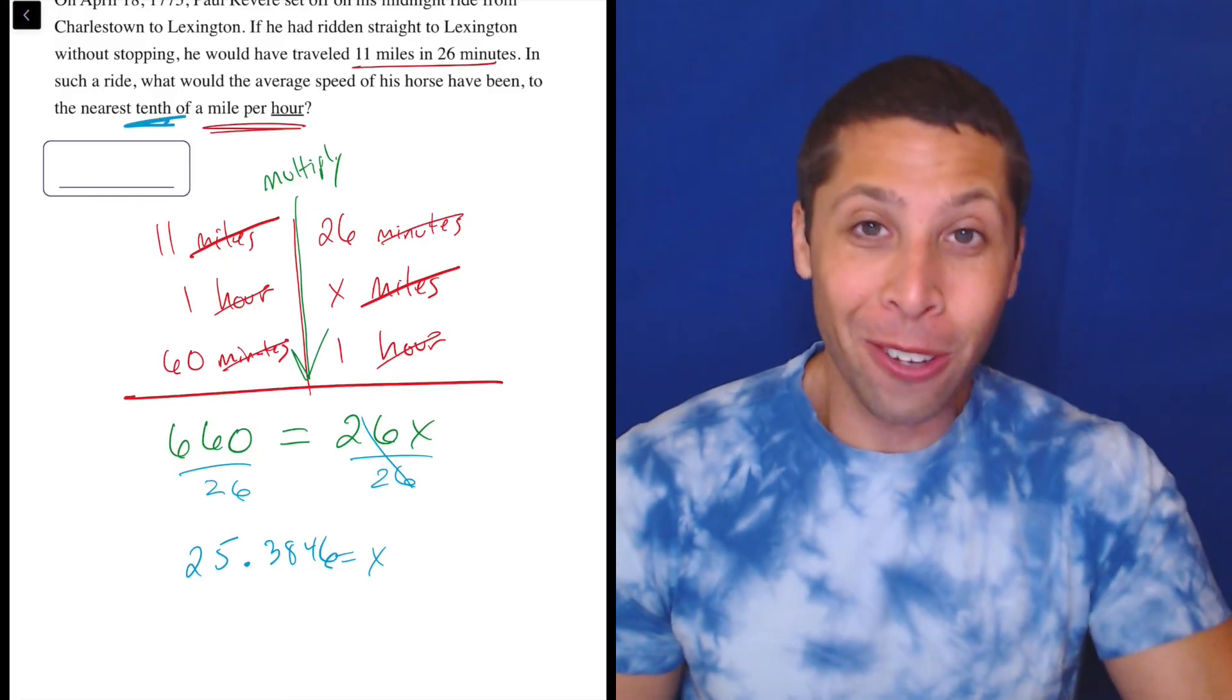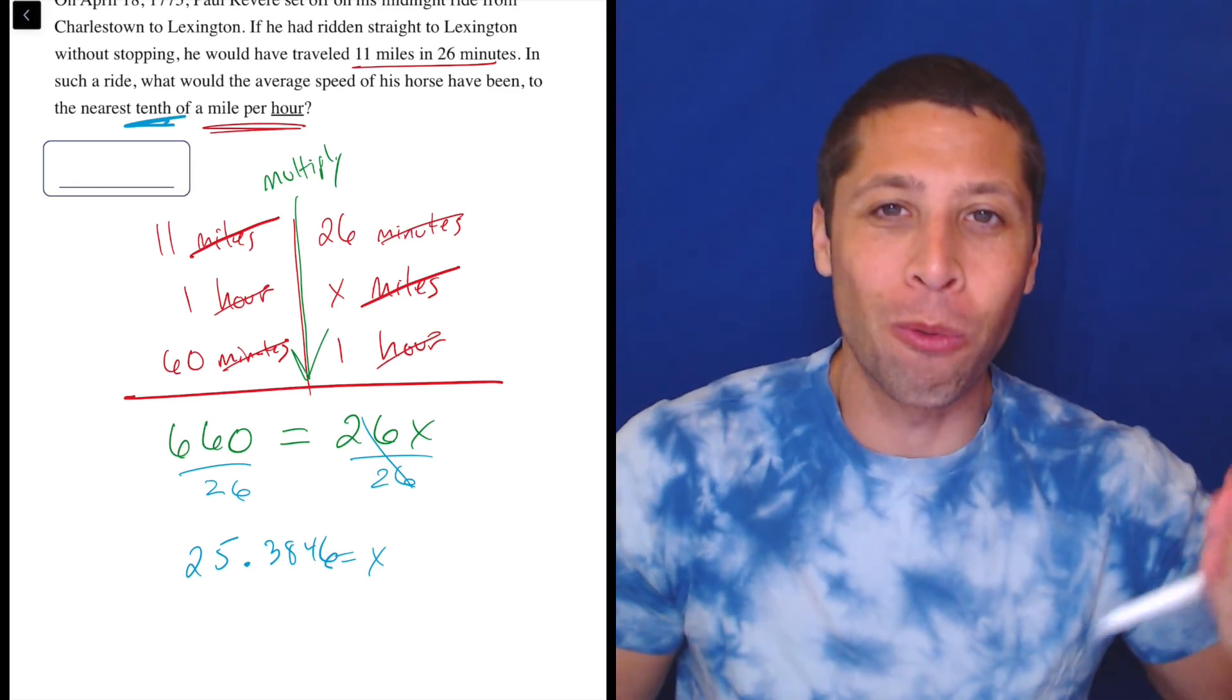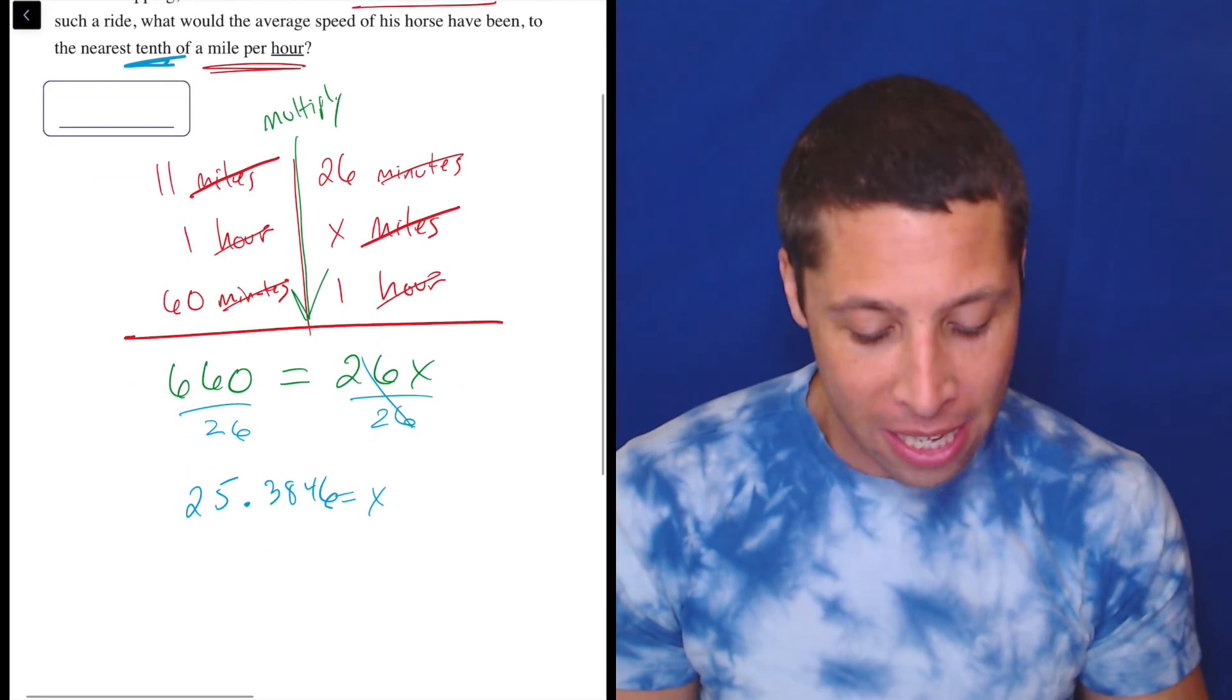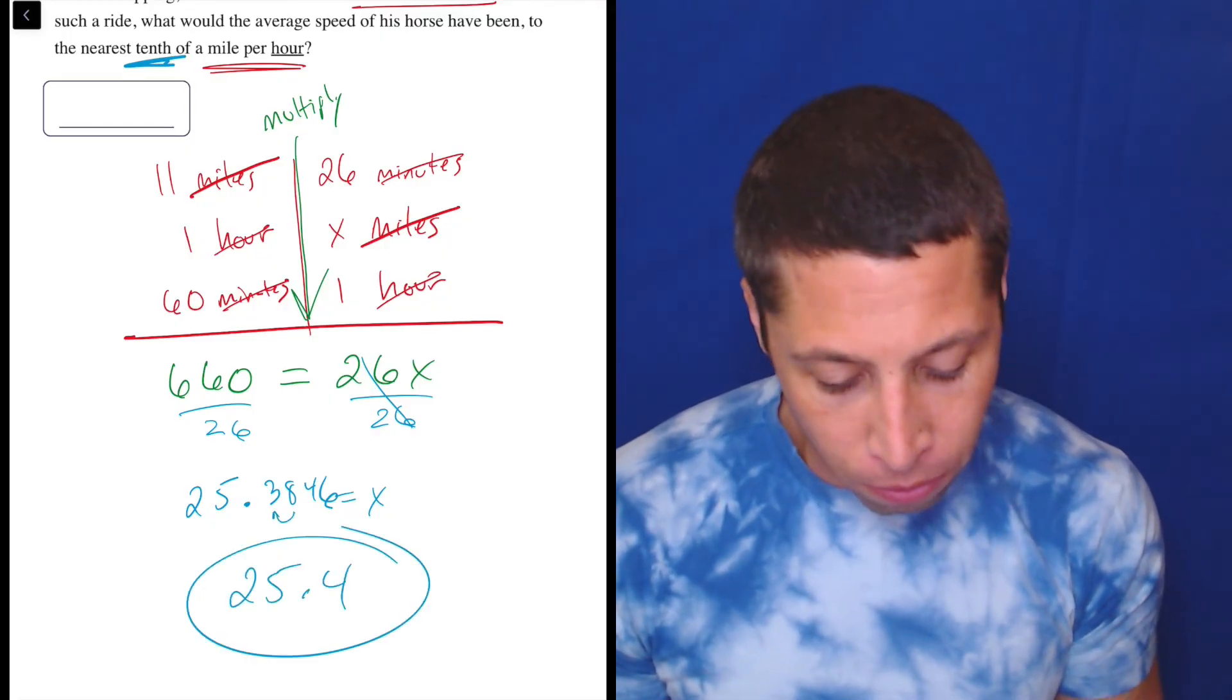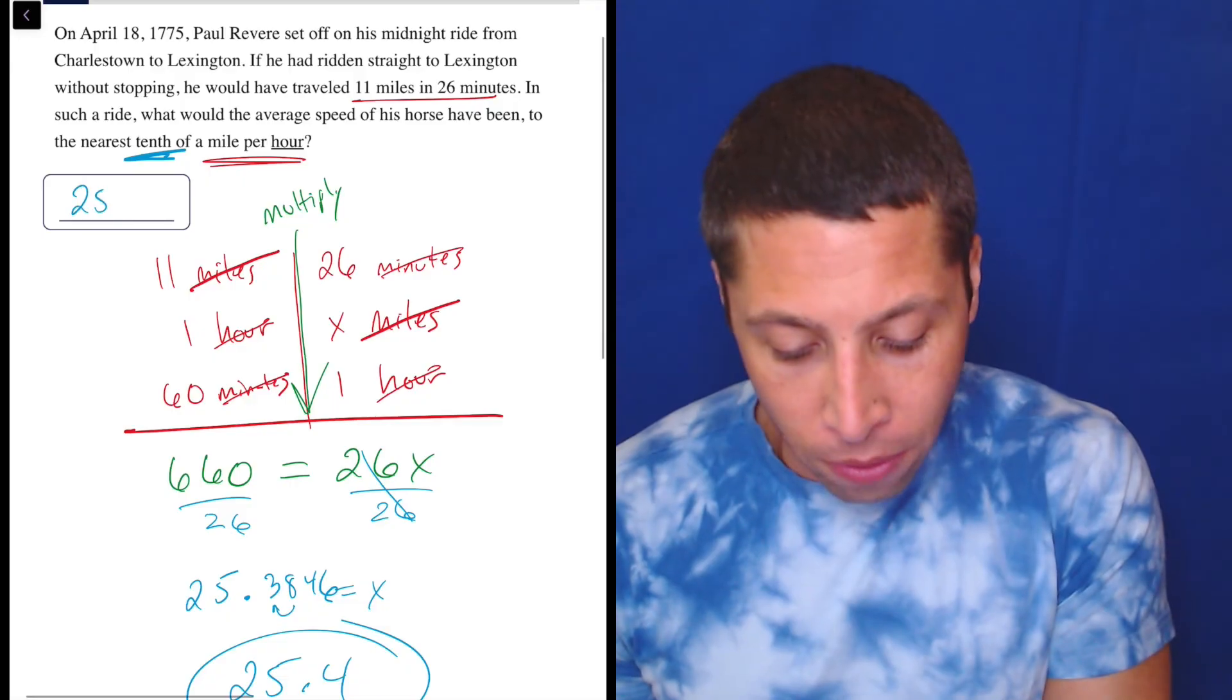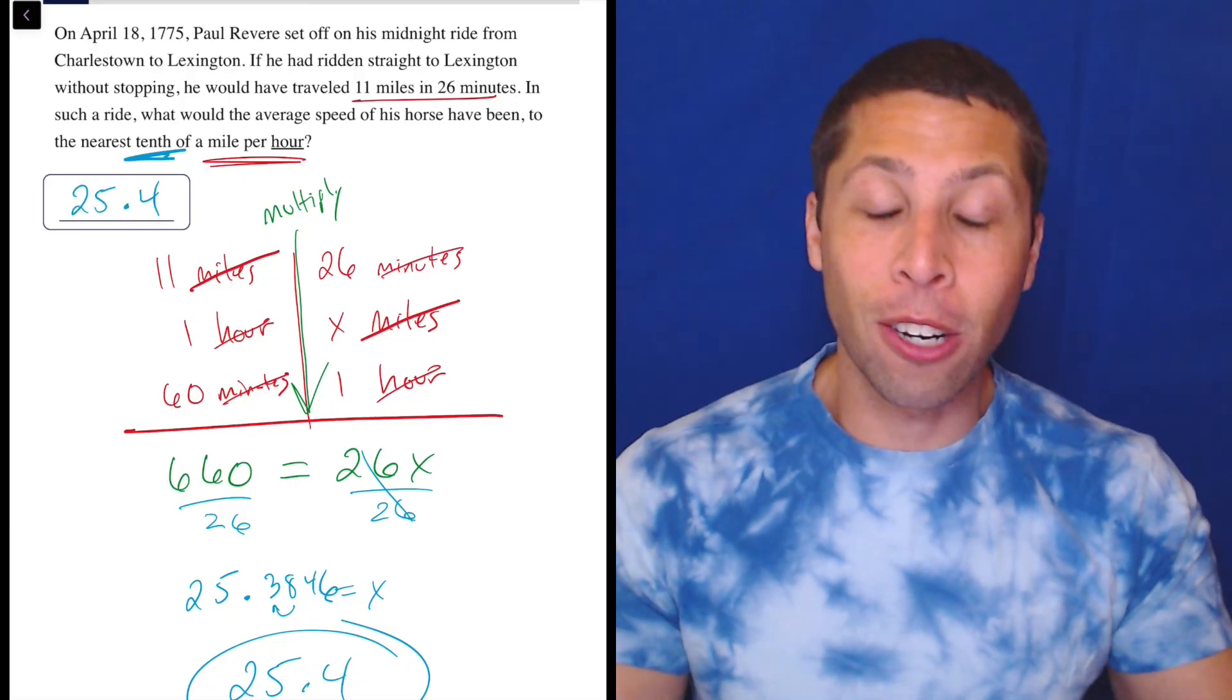Make sure you follow those instructions. The number of times my students get stuff wrong because they just don't read an instruction—it just drives me nuts. So nearest tenth means this eight is going to round this to 25.4. So there you go, 25.4. That is the answer you should put in here, and that is the correct answer.